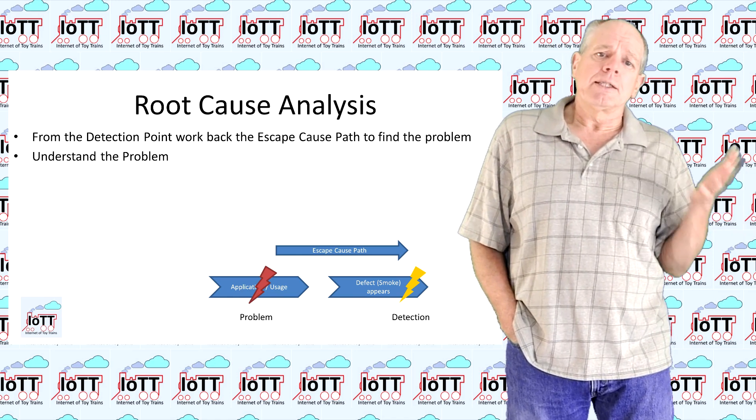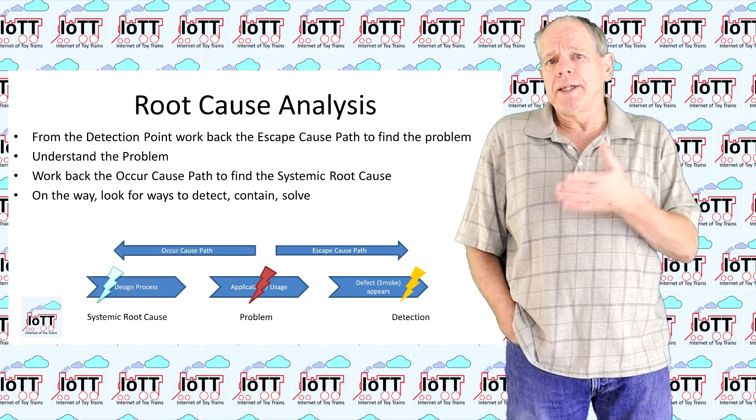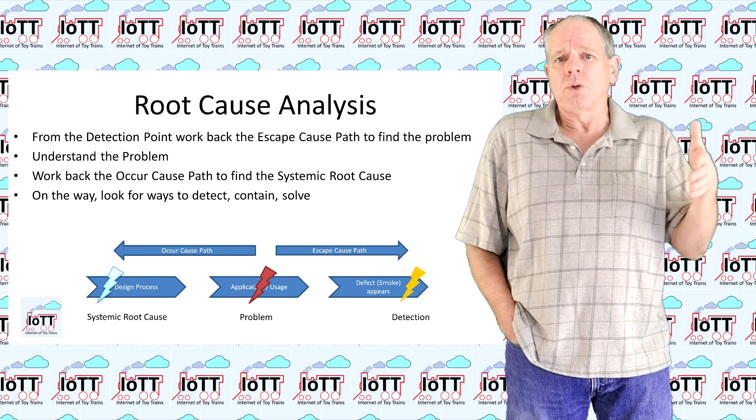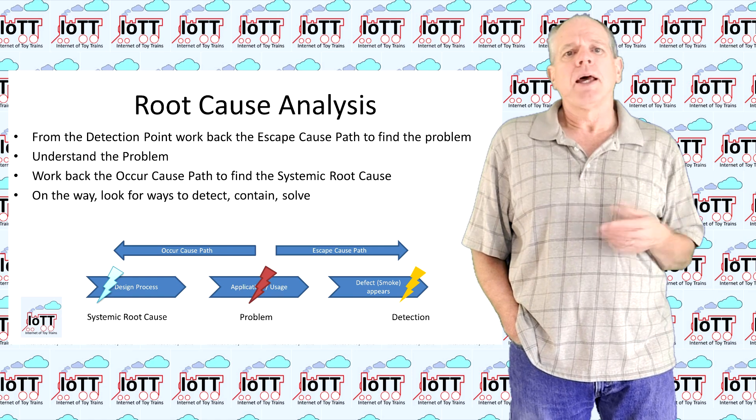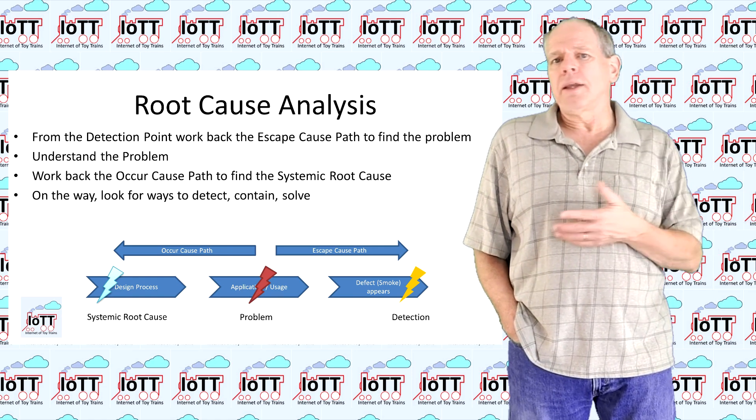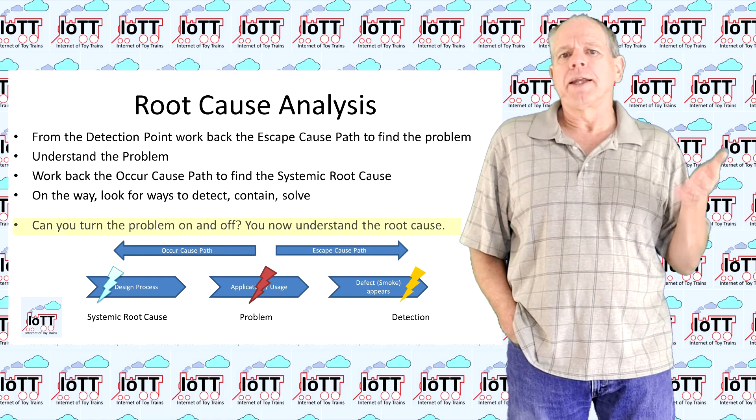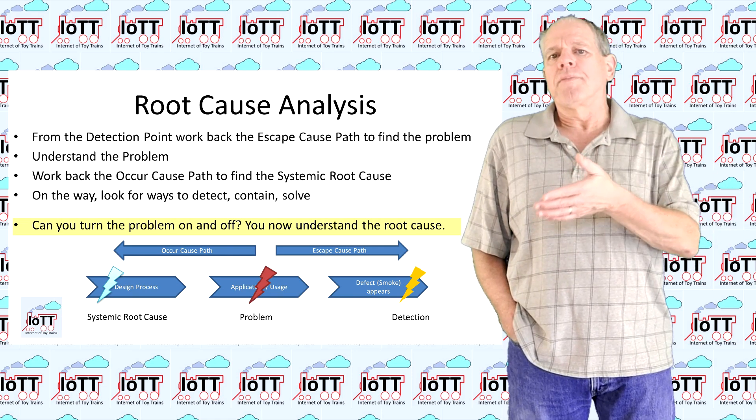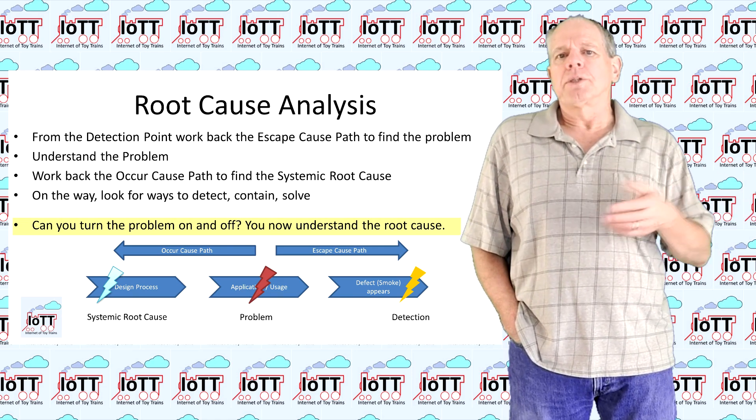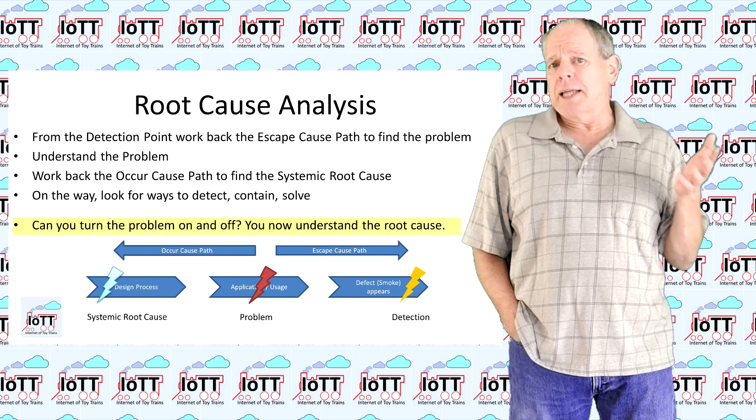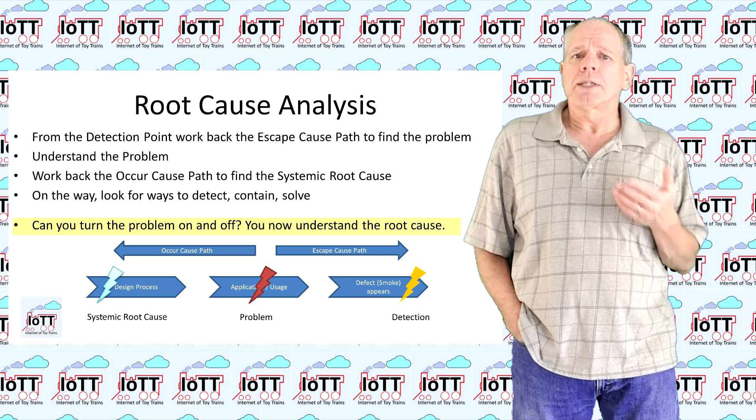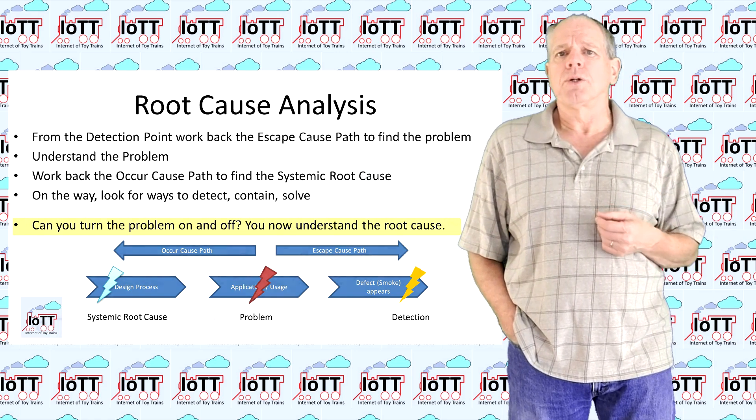Now, this is the problem, but to solve it we need to work back the occur-cause path to understand the systemic root cause. As a general rule, we only understand the problem if we can intentionally make it come and go. Only then we are in a position to actually solve it. Now, with that in mind, let me show you the steps I took to find the root cause.